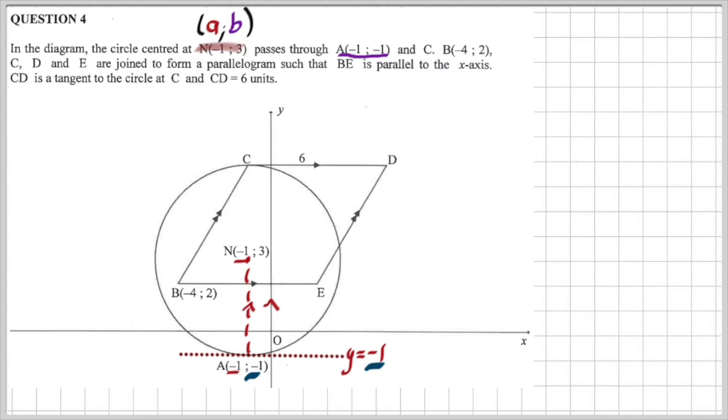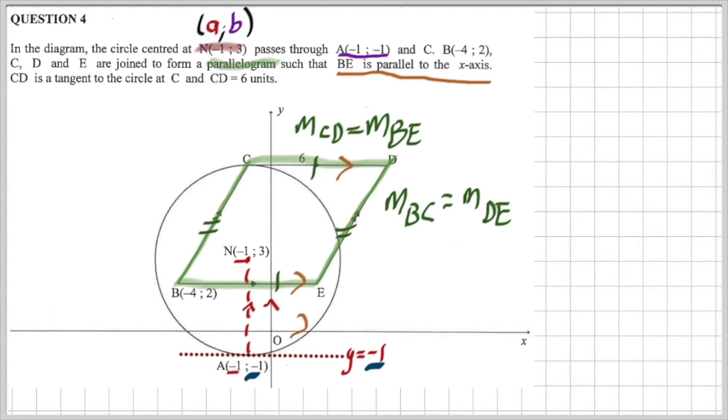Next up, it says there that I've got a parallelogram. Parallelogram B, C, D, E. But a very important thing is the next little bit which says B, E is parallel to the X axis. Because if I look at the first statement I wrote down there in green, the gradient of C, D must be equal to the gradient of B, E. And if B, E is parallel to the X axis, it means the gradients are zero. And you are going to see some awesome things that happen when the gradients are zero. Oh my goodness.